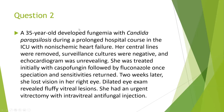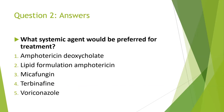Case 2: A 35-year-old developed candidemia with Candida parapsilosis during a prolonged ICU course for non-ischemic heart failure. Central lines were removed, surveillance cultures were negative, and echocardiogram was unrevealing. She was treated with caspofungin, then stepped down to fluconazole once speciation and sensitivities returned. Two weeks later she lost vision in her right eye; dilated exam revealed fluffy vitreal lesions, and she underwent urgent vitrectomy with intravitreal antifungal injection. The preferred systemic agent is voriconazole, which has better ocular and CNS penetration than other azoles. This describes the natural course of endophthalmitis appearing after systemic treatment; remember echinocandins do not have good ocular penetration.